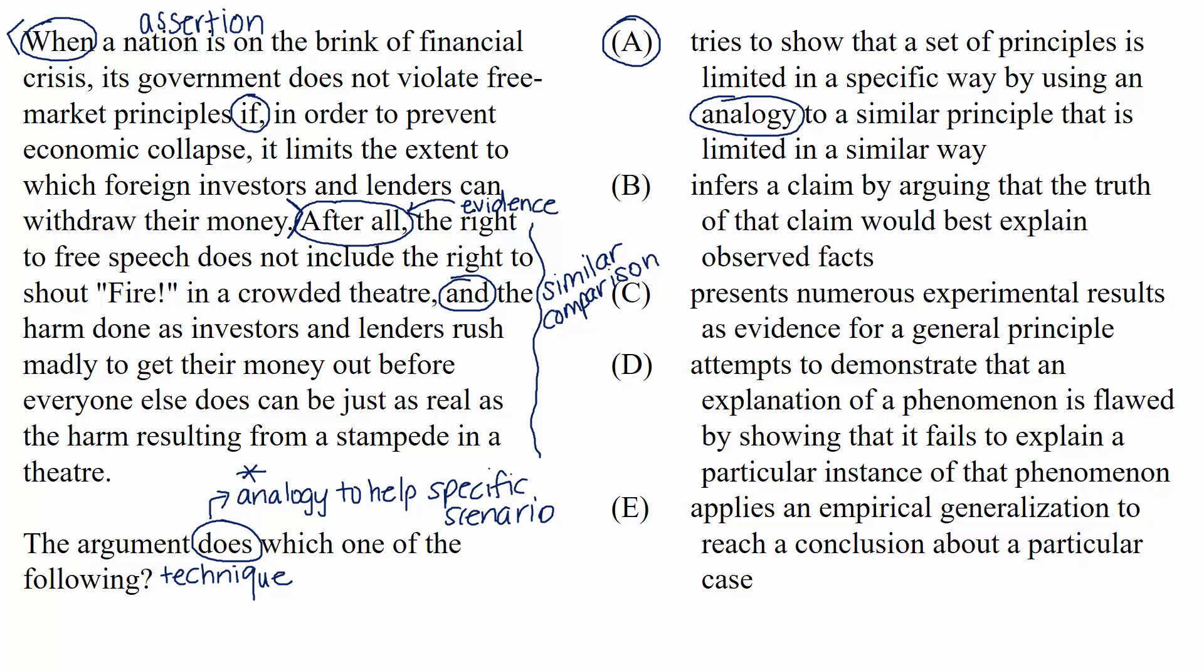Let's look at why the other choices are wrong so that you know what to expect for this question type's wrong choices. B states that the argument infers a claim by arguing that the truth of that claim would best explain observed facts. This doesn't describe what's happening in the argument. There are no observed facts that the arguer is trying to explain. It's common for the wrong choices and technique questions to veer away from what's actually happening in the passage, like we see here.